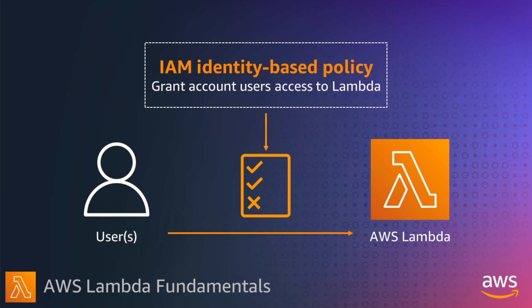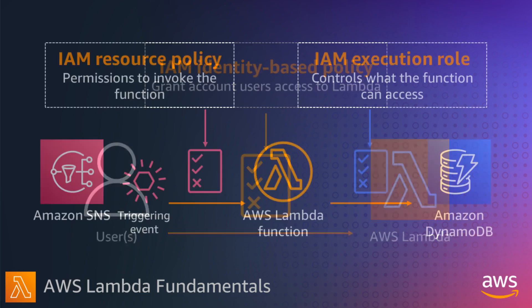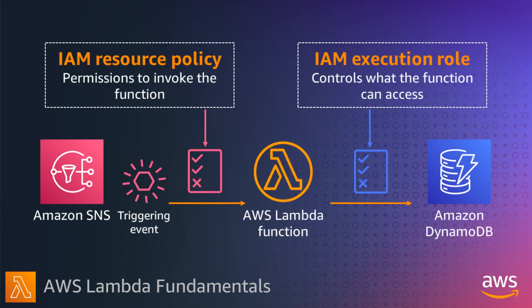You can also grant users in another account permission to assume a role in your account and access your Lambda resources. You can create granular policies to ensure only certain developers can create or update certain functions, for example. There are two other permissions to think about for your functions — you can think of these as two separate parts on either side of the function. The first is what has permission to invoke the function, and this is done using an IAM resource-based policy.